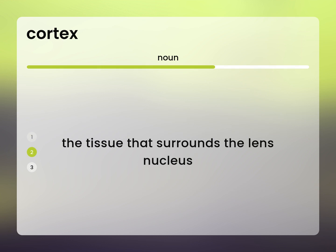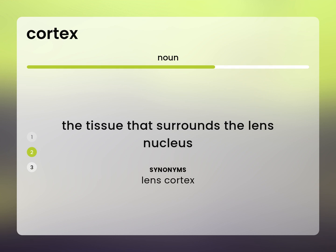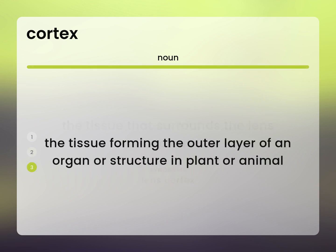The tissue that surrounds the lens nucleus. Lens cortex. The tissue forming the outer layer of an organ or structure in plant or animal.